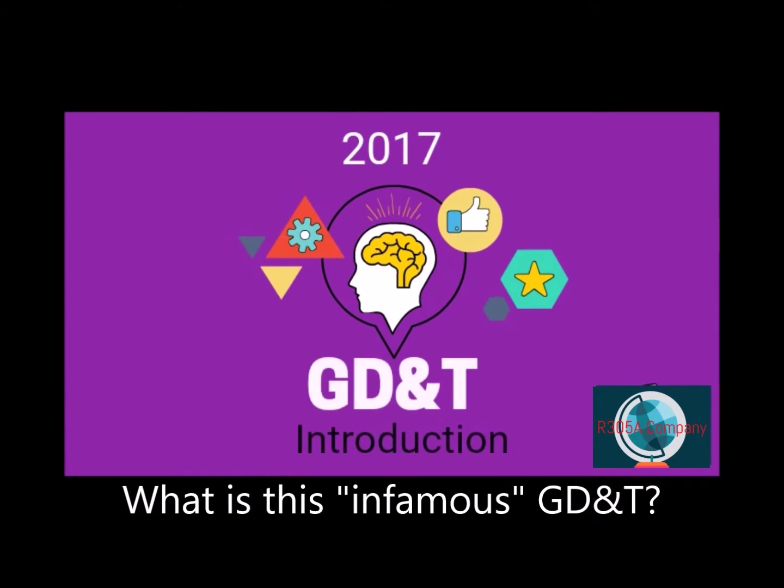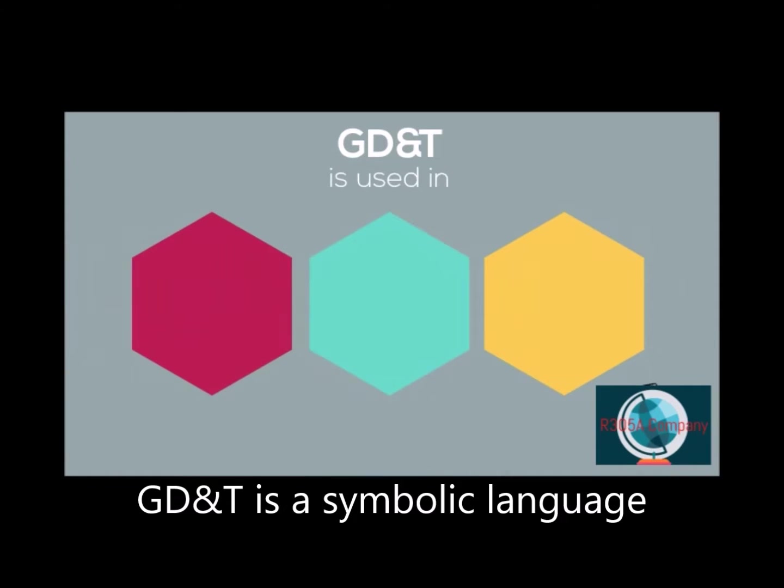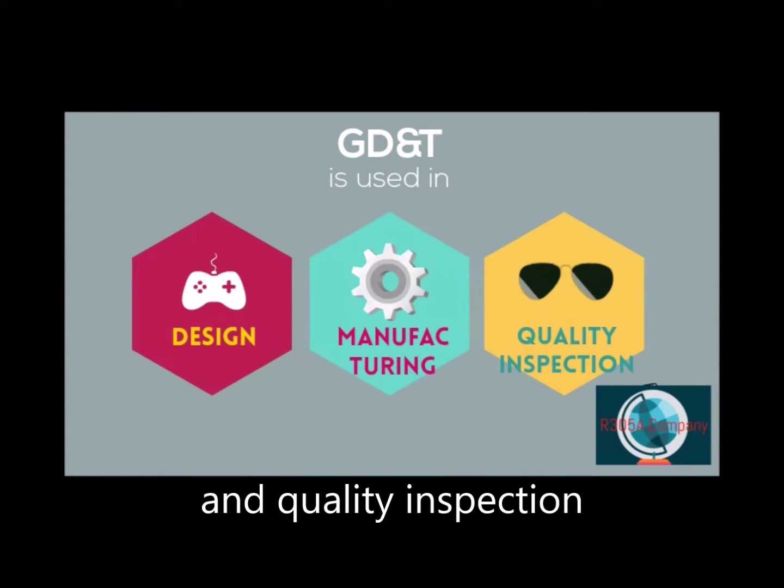What is the infamous GD&T? GD&T is a symbolic language used in design, manufacturing, and quality inspection.